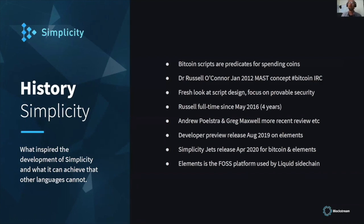The genesis of the project was a discussion of MAST — a lot of people have heard about MAST — and Simplicity is the fuller MAST design, standing for Merkelized Abstract Syntax Tree. This was discussed in 2012 in Bitcoin history on IRC. It's an idea for a next generation Bitcoin script, which is now at an advanced stage of development.